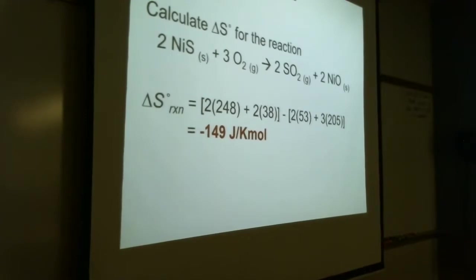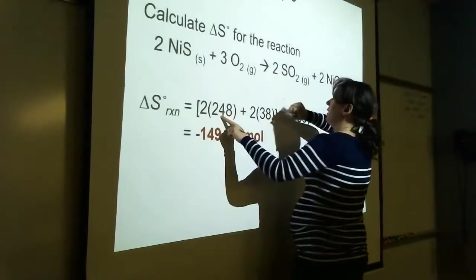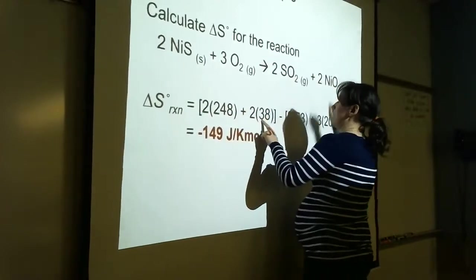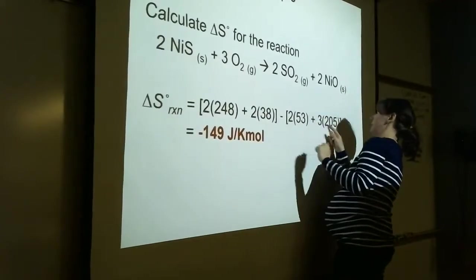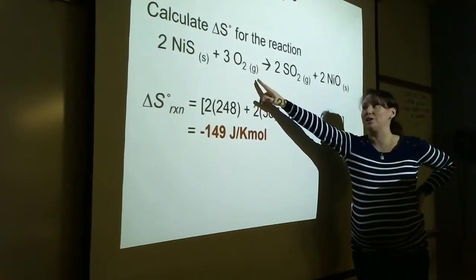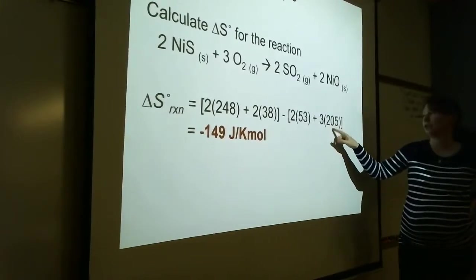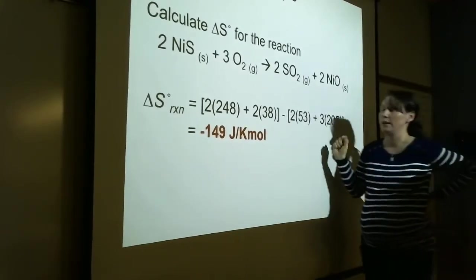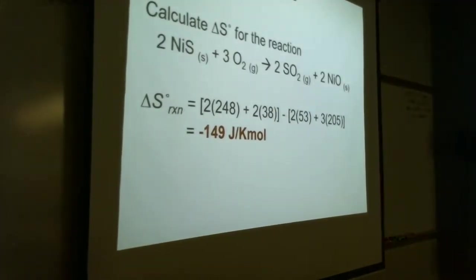Here's an example — calculate delta S for this reaction. We're doing exactly the same procedure: products minus reactants. So it's 2 times the delta S plus 2 times the delta S, minus 2 times the delta S plus 3 times the delta S. Now, pure elements in their most stable form have delta H of always zero, but it's not zero for delta S — so you do have to look it up for delta S. You can't just say it's zero.